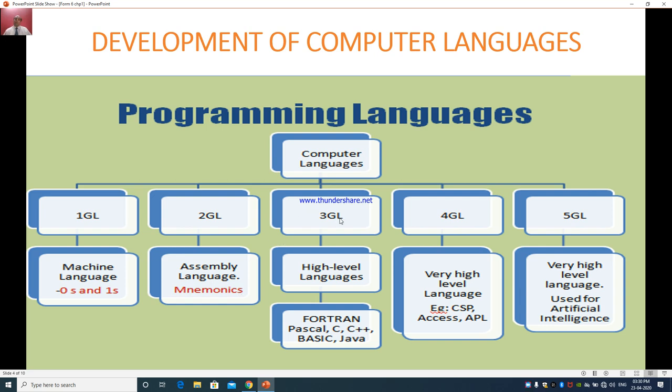Then came the third generation language which is high level language. Examples of such languages are Fortran, Pascal, C, C++, Basic, Java.